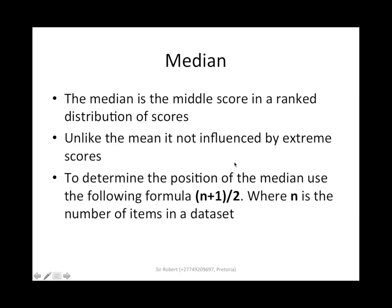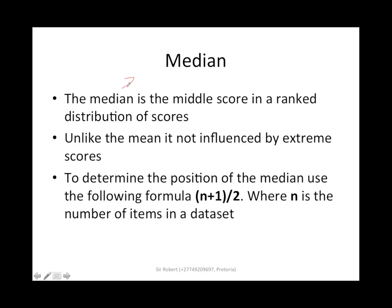Let's move on to the median. The median is the middle score in a ranked distribution of scores — the median is the 50th percentile. Unlike the mean, it is not influenced by extreme scores. To determine the position of the median, use the formula: n plus 1 divided by 2. This gives the position of the median in the data set, where n is the number of items.